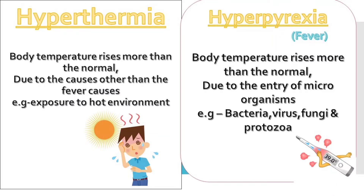Now we will move to hyperpyrexia. The word 'hyper' here also indicates more or increase and the word 'pyrexia' gives us fever. The total meaning of hyperpyrexia is the body temperature rises more than the normal. Hyperpyrexia occurs mainly due to the entry of microorganisms — such as bacteria, virus, fungi, and protozoa — not because of exposing the body to a hot environment.